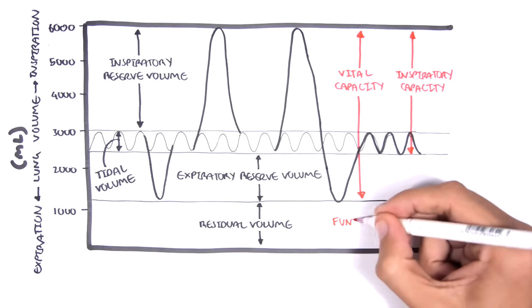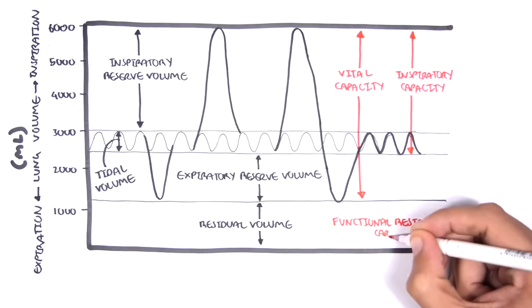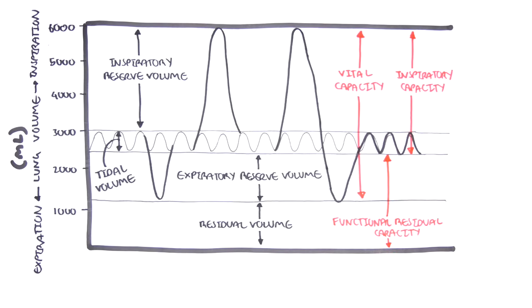The functional residual capacity, which should not be mixed up with the residual volume, represents the volume of air remaining in the lungs after expiration of a normal breath. So, this is essentially the residual volume plus the expiratory reserve volume. And the amount is typically 2.5 liters.